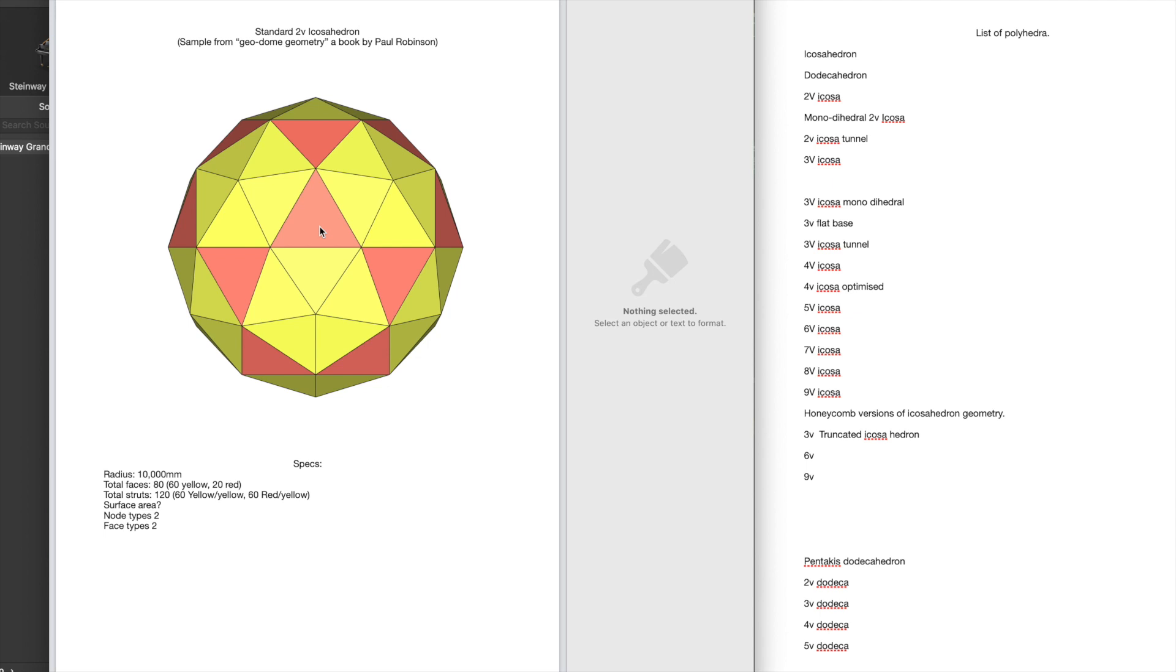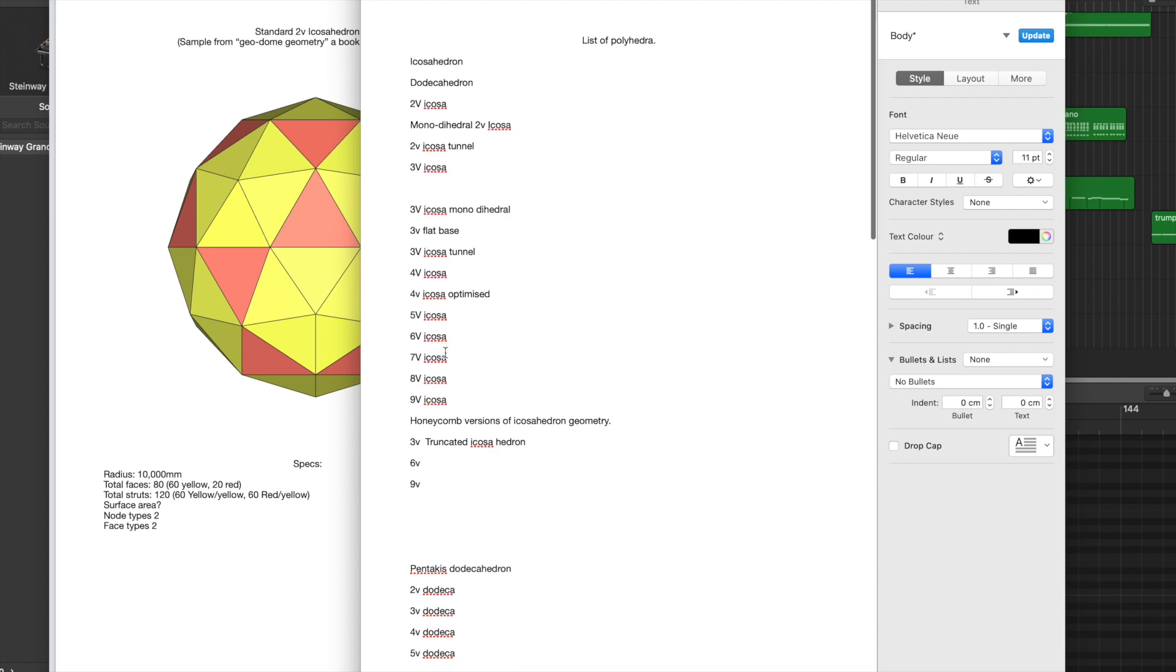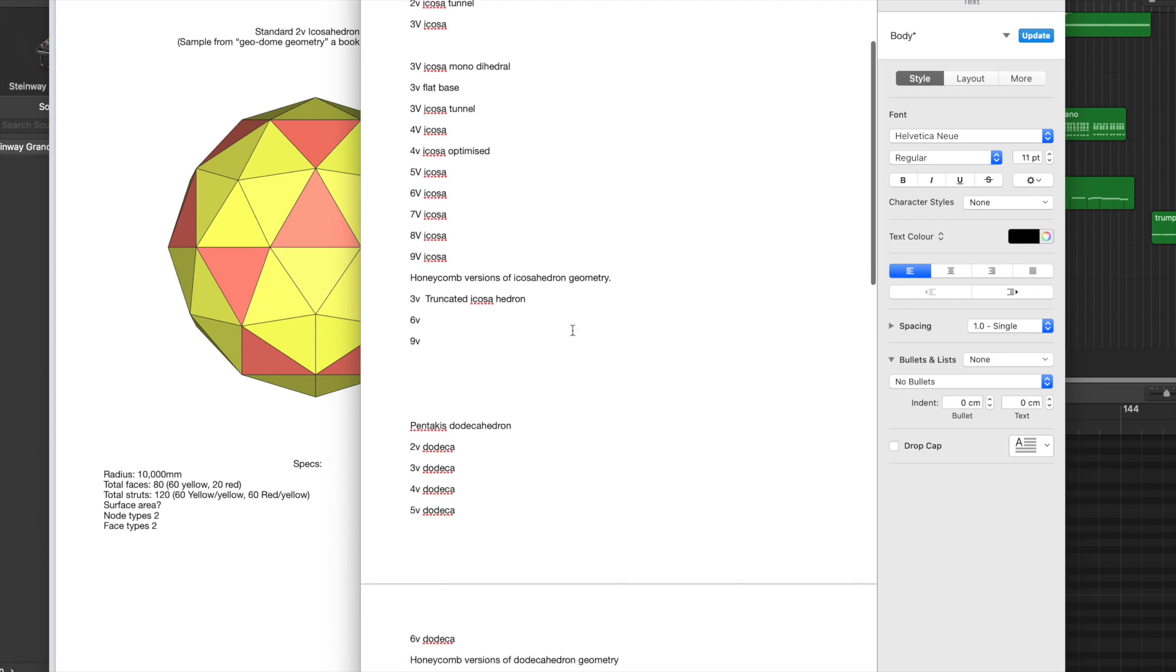This is going to be the template going forward. As you can see, I have a lot of different polyhedrons to do. We've got the two-frequency icosa. I'll quickly run you through this one. I've got the 2v monodihedral, a 2v tunnel, and then we go 3v, 4v, 5v, 6v—all icosahedron and honeycomb versions, so there'll be truncated ones.